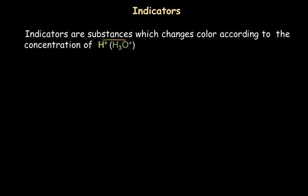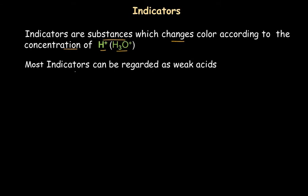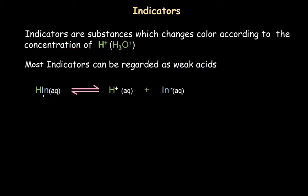Indicators are substances which change color according to the concentration of hydrogen ion or hydronium ion present in the solution. To understand the working of an indicator we need to know that most indicators are weak acids, and that is why we can represent an indicator with the symbol HIn — as a weak acid which will dissociate partially into a hydrogen ion and the anion of the indicator. The molecular form of the indicator has some color and the anion of the indicator has a different color.